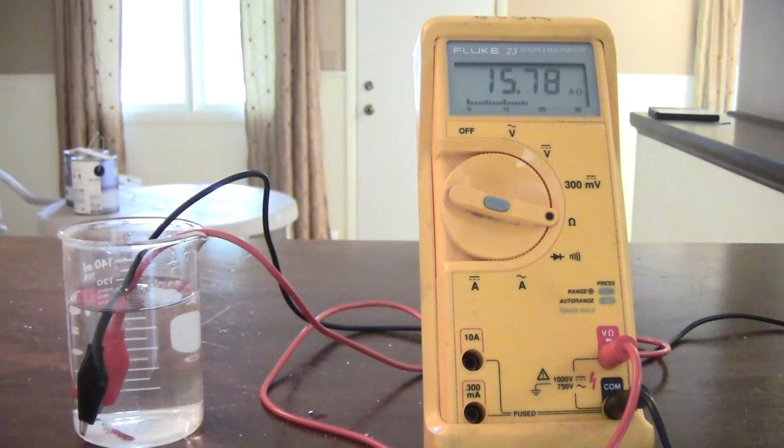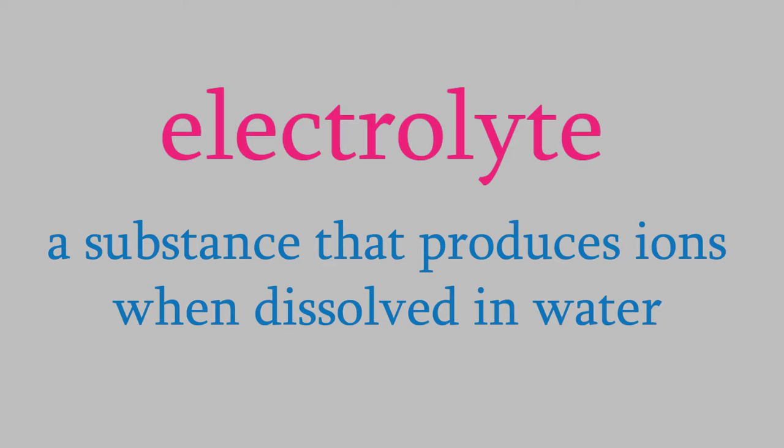So water containing dissolved ions can carry an electrical current. For that reason, ionic compounds that can dissolve in water are called electrolytes. The name electrolytes gives you a hint as to what's going on. The electro tells you that solutions of electrolytes can carry electricity.